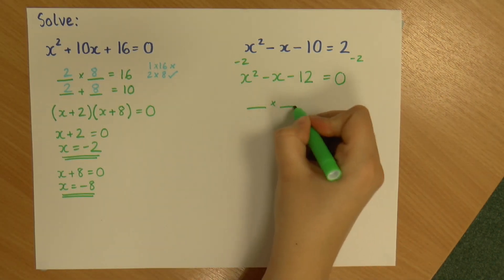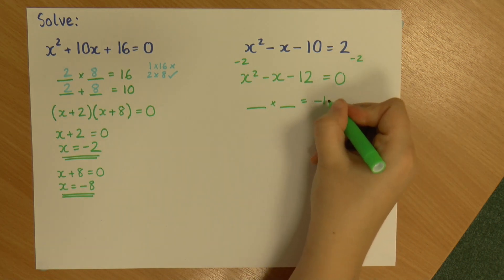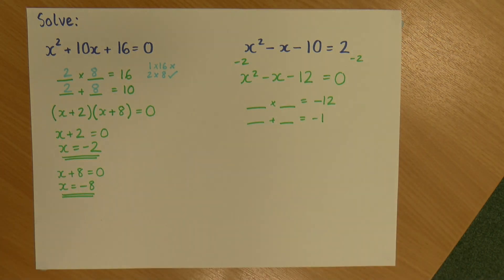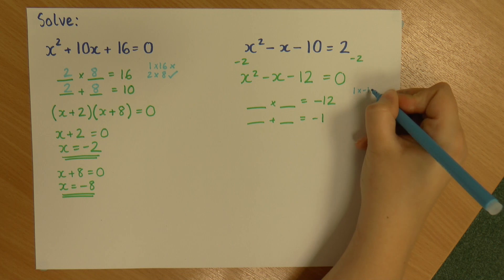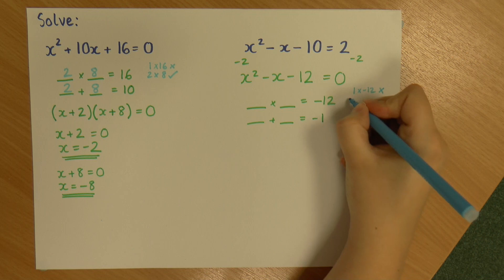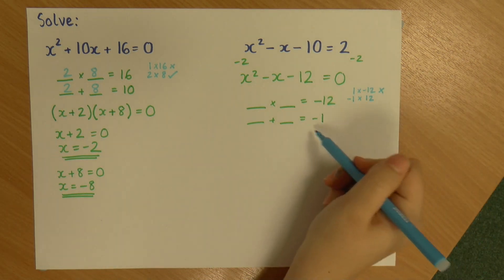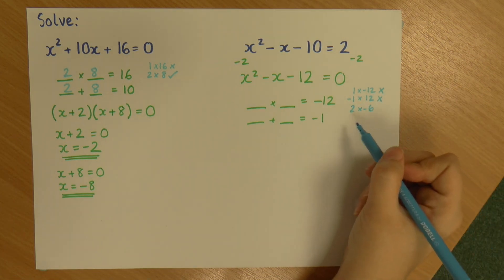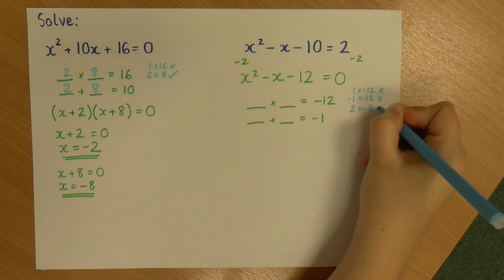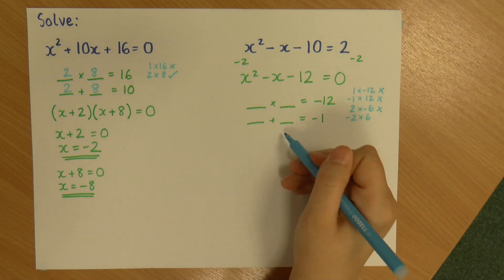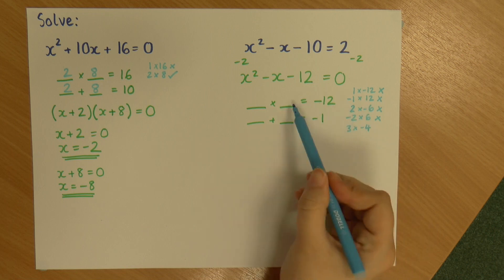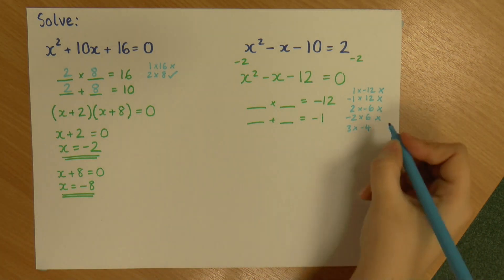So I need to find two numbers that multiply to give me the end number, which is minus 12, and add together to give me the middle number, which, remember, there's a hidden one here. So it's minus 1. So, pairs of numbers that multiply to give me minus 12. I could have 1 times minus 12. However, they don't add together to give me minus 1. I could have minus 1 times positive 12. Still don't add together to give me minus 1. What comes next? 2 times minus 6. Okay. And those don't add together to give me minus 1. Minus 2 times positive 6. Still don't add together to give me minus 1. 3 times minus 4. So, they multiply to give me minus 12. And they add to give me minus 1. So these are my pair.